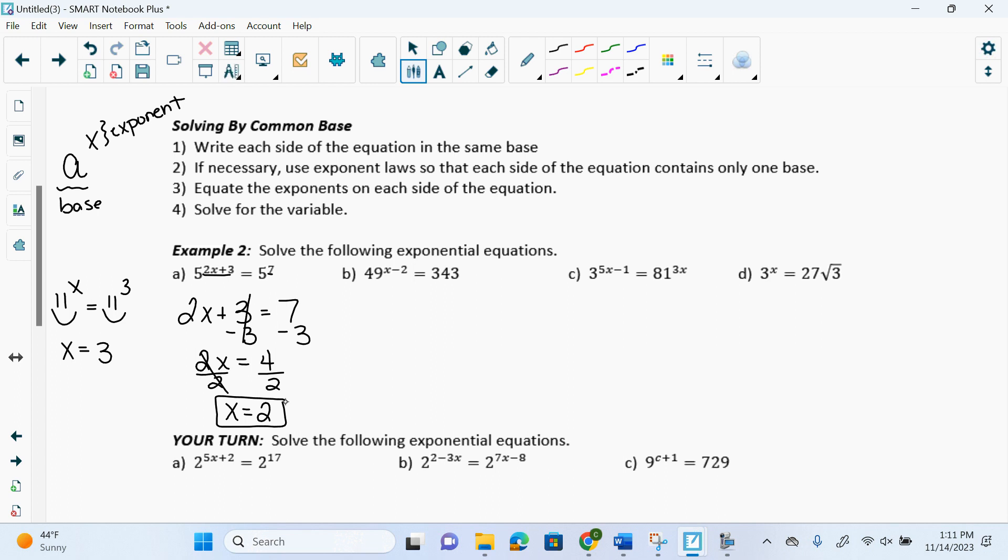Okay. We have 49 to the x minus 2 equals 343. What base can I make them both be? 49. Is there something I could make it? 7 what? 7 to the what? To the 1 is 49? 49. There we go. Just have to take a little break to think. 7 squared. No. No, but 7 to the what? 1. No, no. x minus 2. Then we have to make the other side to the same base. We're trying to find a base that can both be. 7 what is 343? 7 to the what?